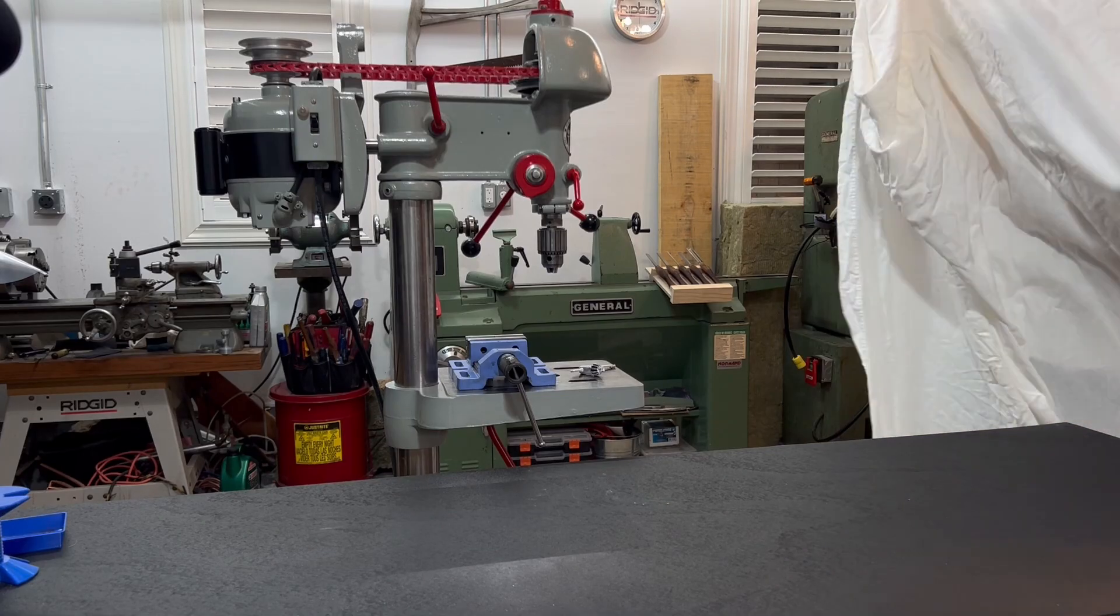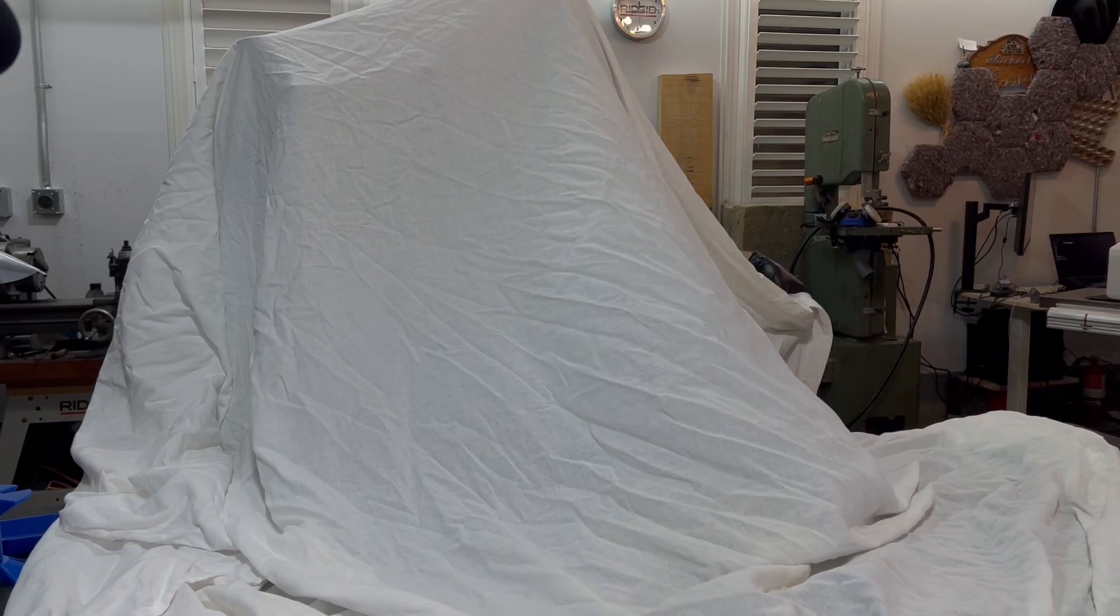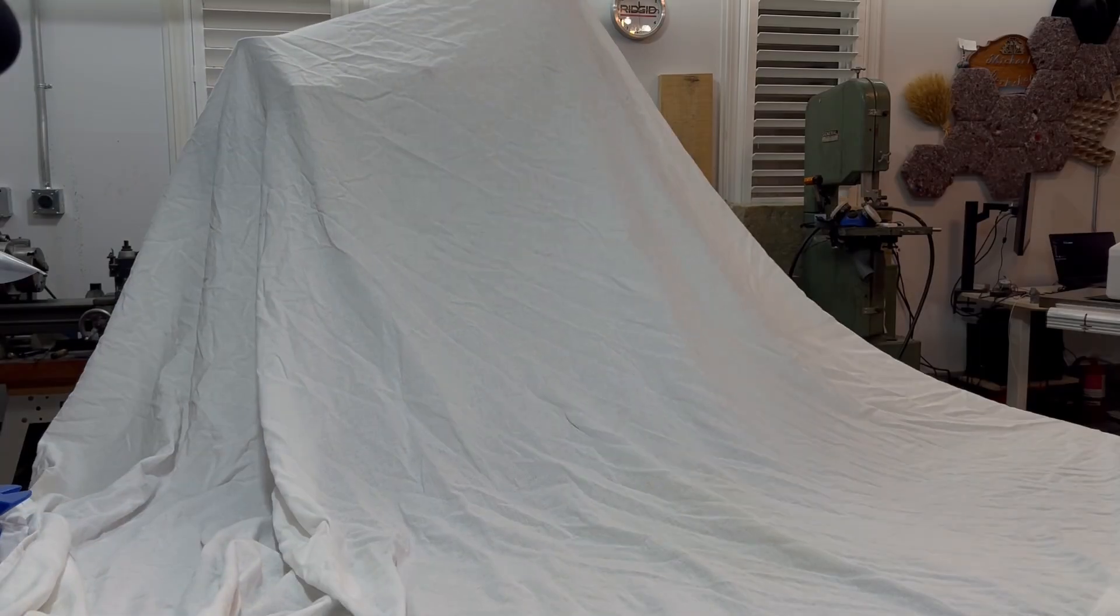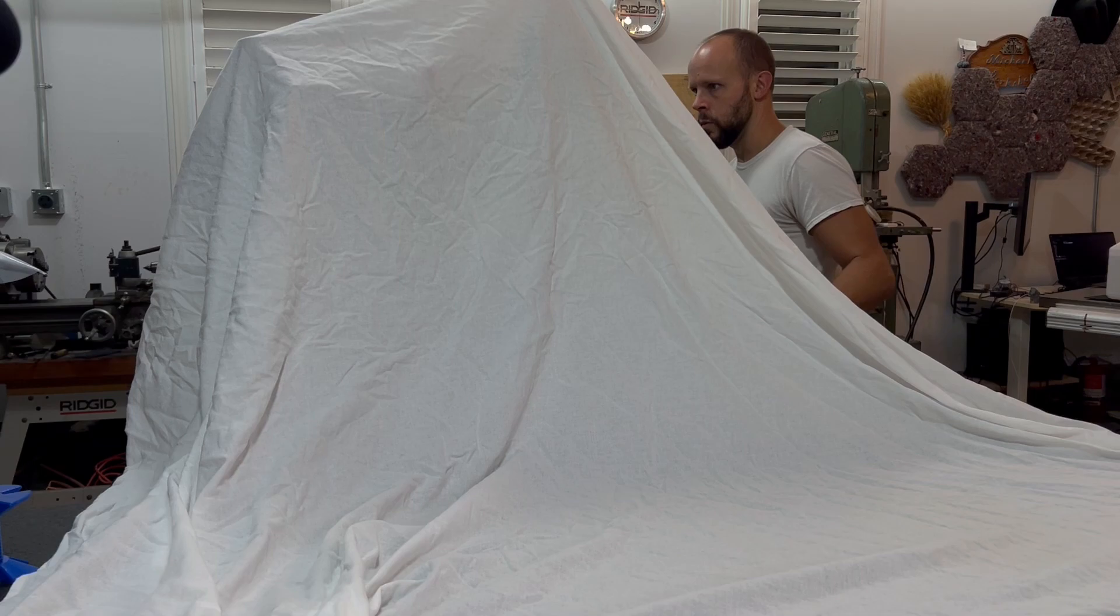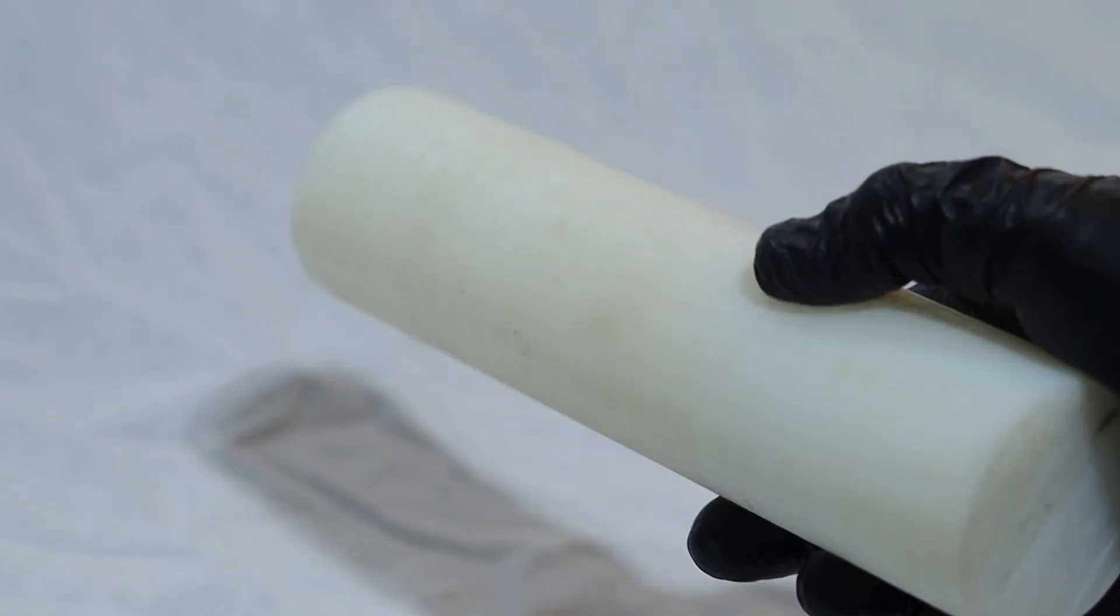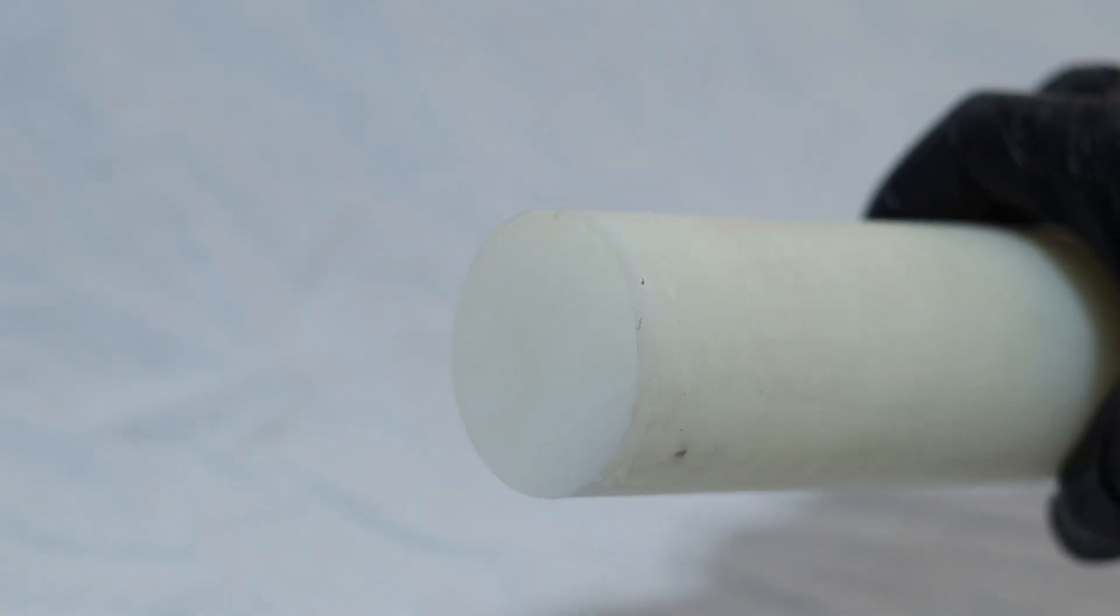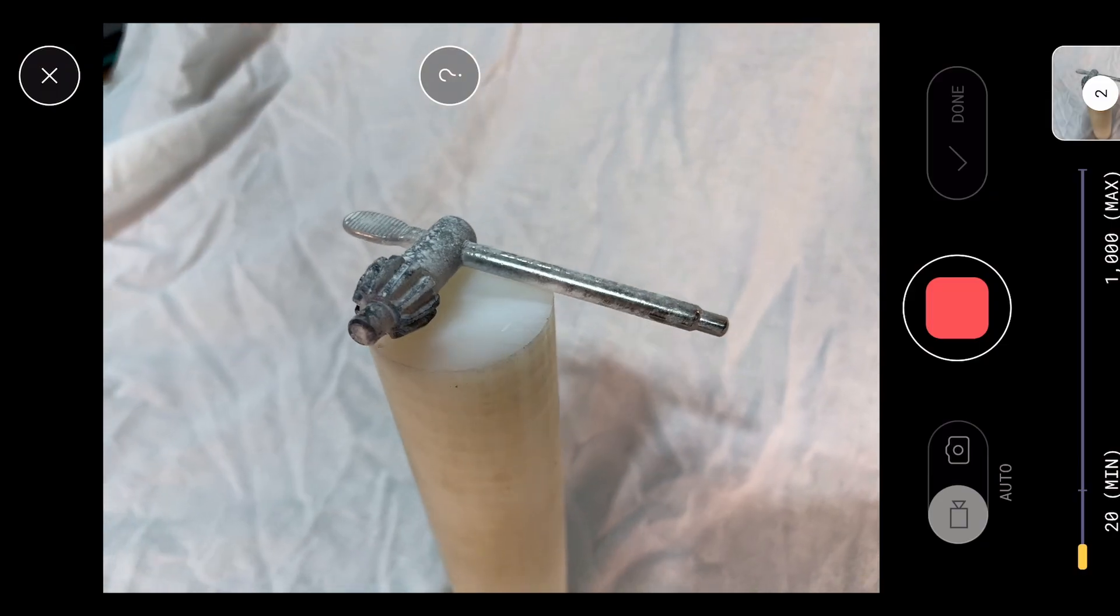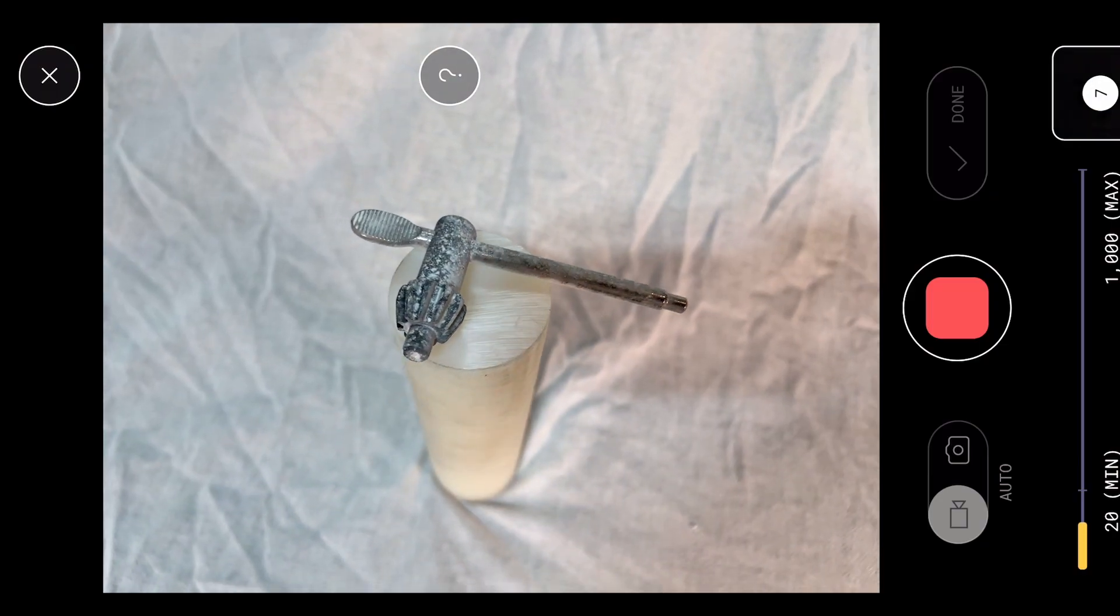I also like to scan in front of a surface that's uniform in color. In this case I'm just using a white sheet, and this should help the software to distinguish the background from the key more easily. I've also propped the key up on a white plastic rod. This just helps me to get under and around more easily while I'm scanning.